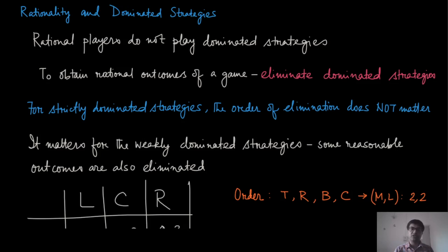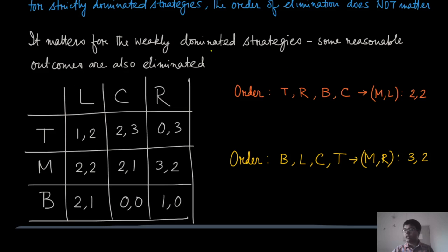But this is not true when the dominated strategies are weak. You may end up eliminating certain strategies and arrive at a different game than if you had chosen the elimination order differently. So let us look at an example where the row player has three strategies — top, middle, and bottom — and the column player has left, center, and right. Strategy M for player one weakly dominates strategy T.